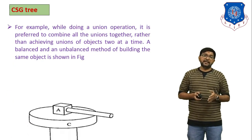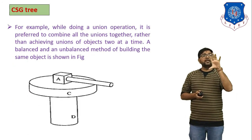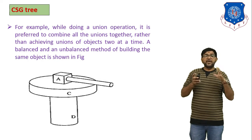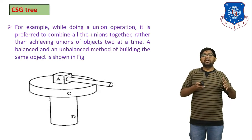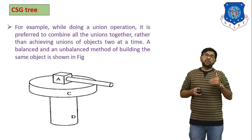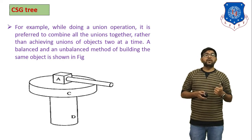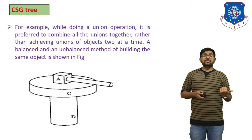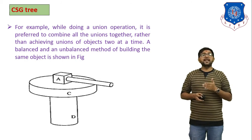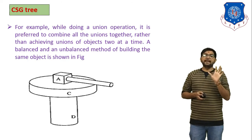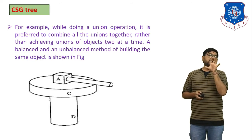Next is the CSG tree. If we have a body with four or five components, how do we combine them? There are two types of trees: an unbalanced tree and a balanced tree. For example, when doing a union operation it is preferred to combine all unions together rather than achieving union of objects two at a time. In the figure below, we have four components: A, B, C, and D, and we combine them using both methods.